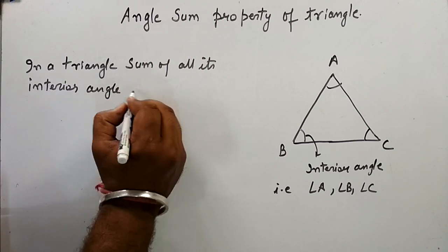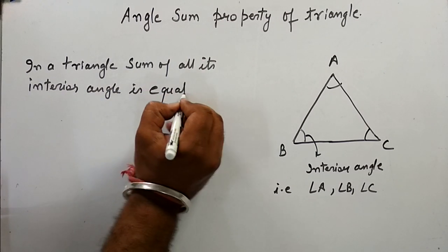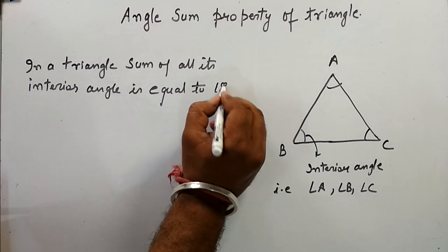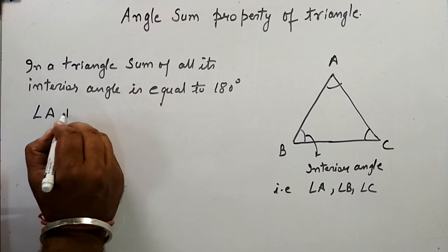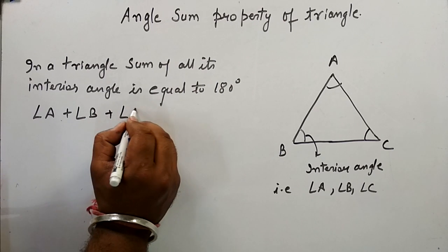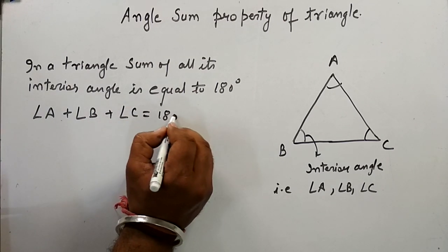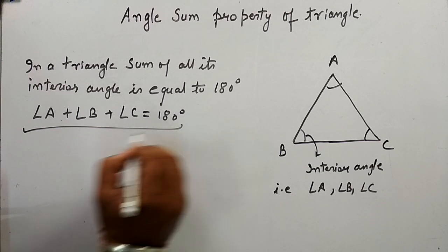...is equal to 180 degrees. That is, angle A plus angle B plus angle C is equal to 180 degrees. This we need to prove.